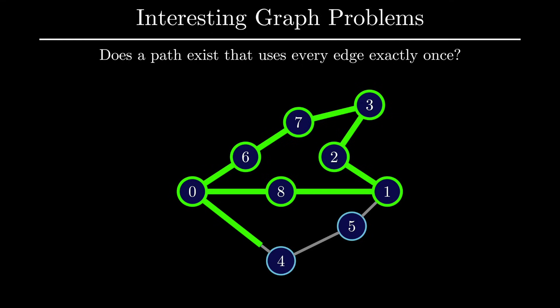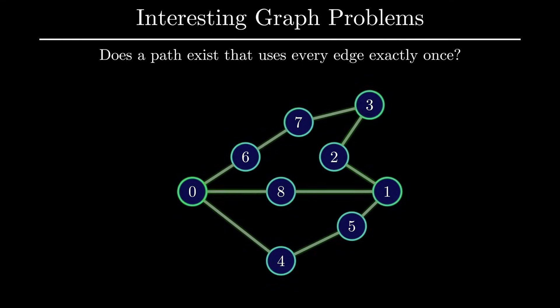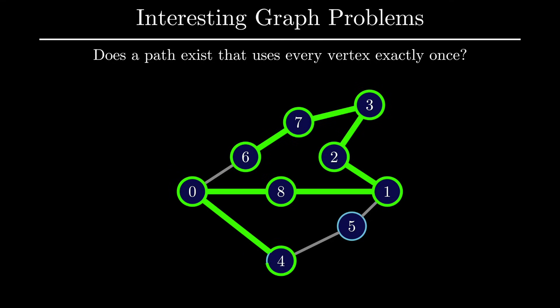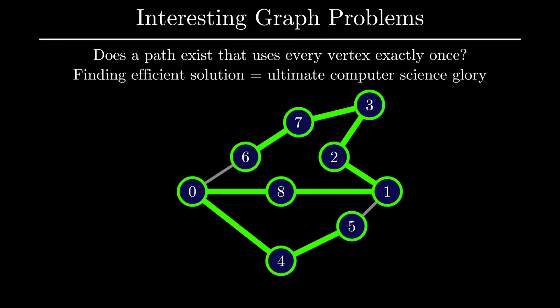These types of paths have tons of interesting applications in bioinformatics and circuit design. A similar question is: what about the existence of a path that uses every vertex exactly once? Such a path also exists in this graph, but what you'll find more surprising is that there exist no efficient algorithms to solve this problem. All algorithms that we have so far run in exponential time for this problem, which is incredibly slow for large enough graphs. In fact, if you are able to find an efficient algorithm for this particular problem, you would probably be given every single computer science award in existence because it would help resolve a long-standing open problem. But there's a fairly large consensus that no efficient algorithm for this problem exists.